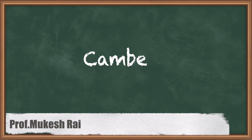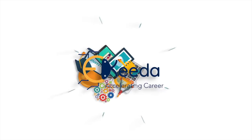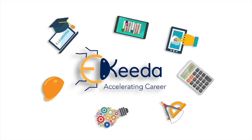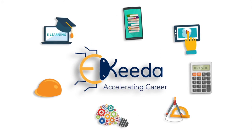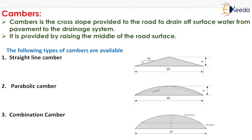Hello students, today we are going to study camber. Now what do you mean by camber? Camber is the cross slope provided to the road to drain off surface water from the pavement to the drainage system.